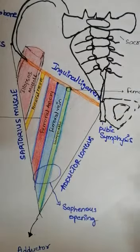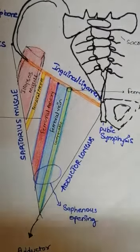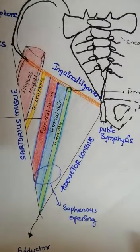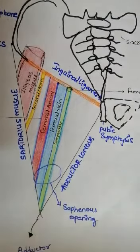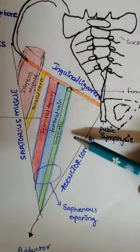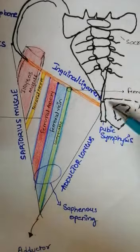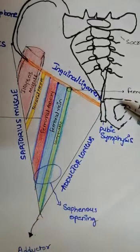So this was the general explanation about the boundaries, the contents, and the fascial sheath of the femoral triangle. I hope this was explained well. Thank you for watching. Subscribe for more.